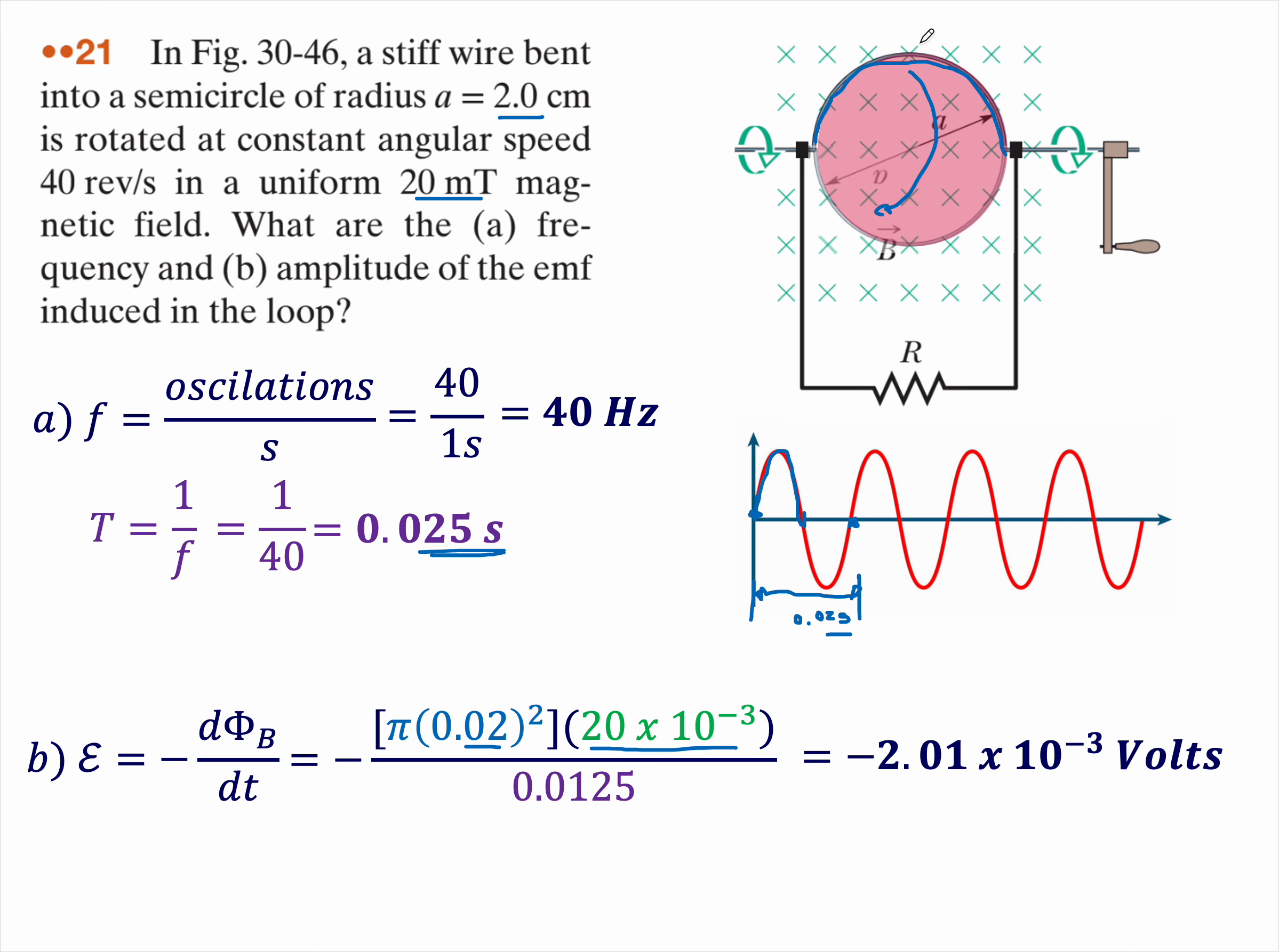If you plug in those numbers, you'll discover that the EMF is going to be negative 2.01 × 10⁻³ volts. Technically, the change in flux is negative, so this should actually be a positive value. But we're only interested in the magnitude, or just the amplitude of the EMF, so you could drop the sign. That's about 2.01 millivolts. Hopefully that makes sense. Good luck.